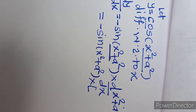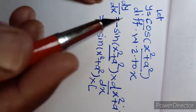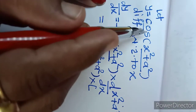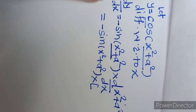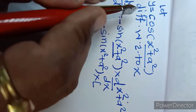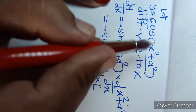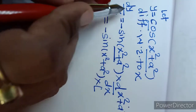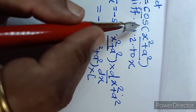In Exercise 1.1, Chapter 1 on Differentiation, question 2 asks us to differentiate the following functions with respect to x. The first sub-question is y = cos(x² + a²). So, differentiate this function with respect to x, giving us dy/dx.